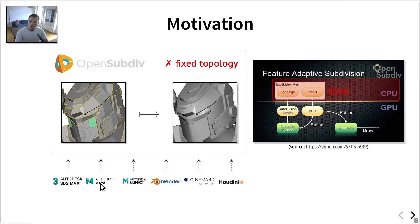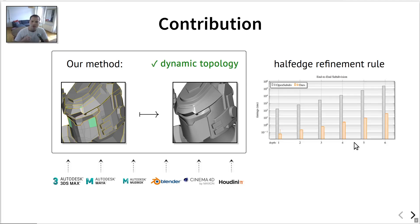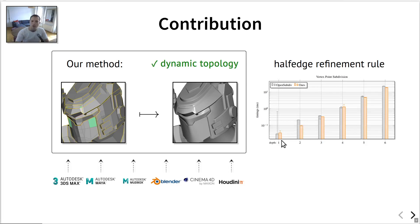So in this paper, we introduce an alternative algorithm that supports dynamic topology. And the way we do this is by introducing this so-called half-edge based refinement rule that allows us to compute the subdivision efficiently. In terms of performance, it turns out that we are able to achieve orders of magnitude speedups with respect to OpenSubdiv on dynamic topology. And for the case of static topology, which is what OpenSubdiv is built and optimized for, we run pretty much at the same speed.